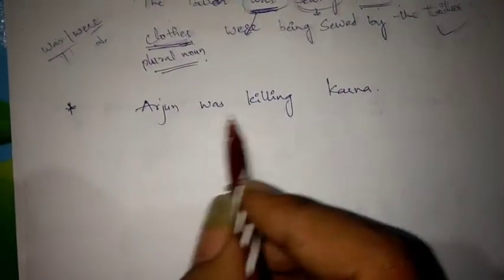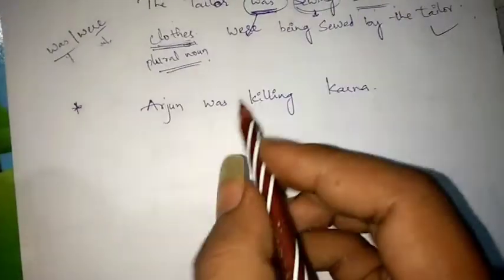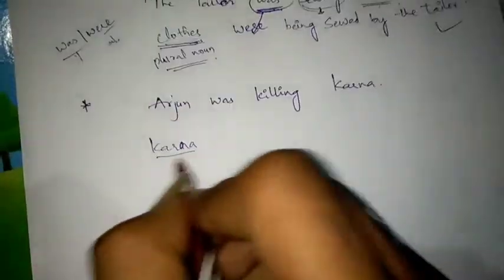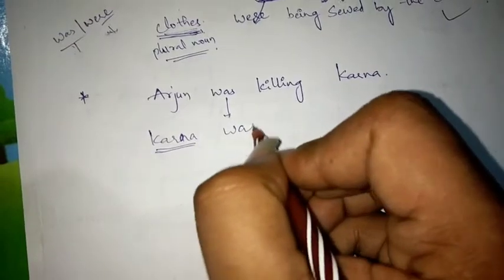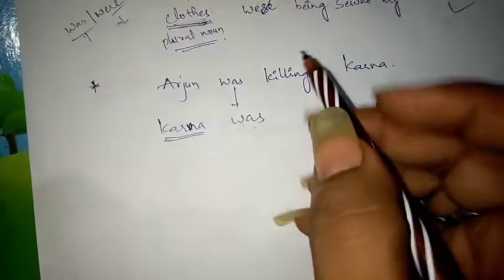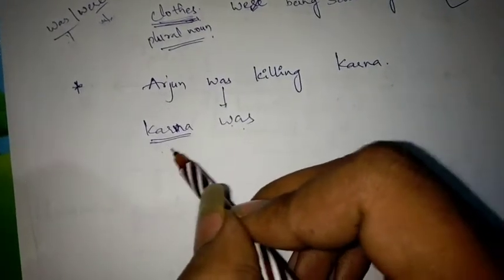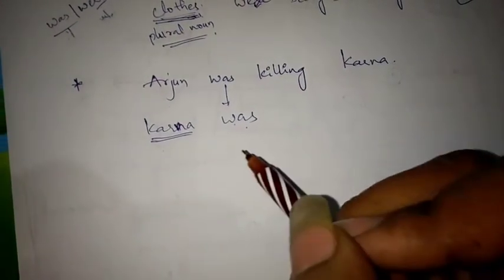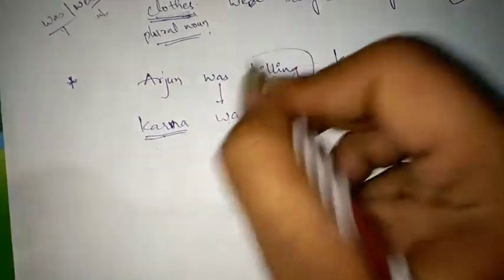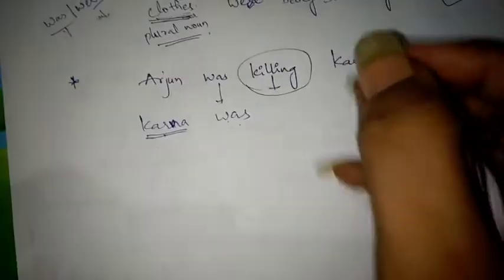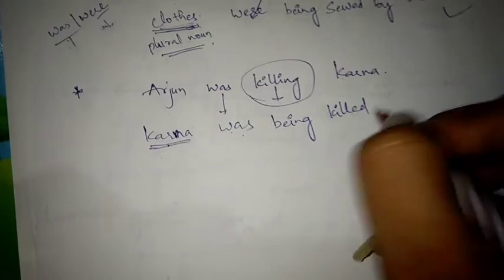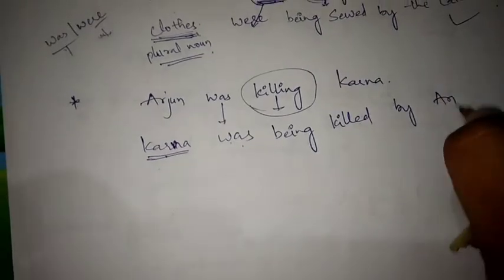Next: 'Arjun was killing Karna.' Karna is singular, so we use 'was' directly. For singular we use 'was', for plural we use 'were'. In present continuous, for singular we use 'is' and for plural 'are'. Converting V4 into V3: 'Karna was being killed by Arjun.'